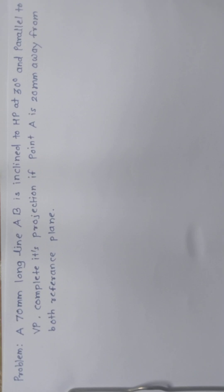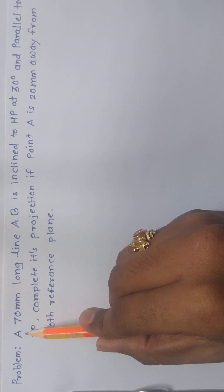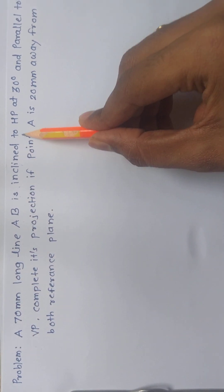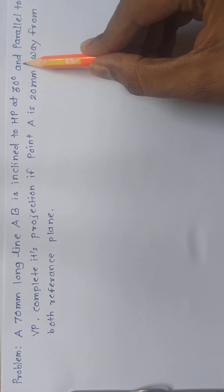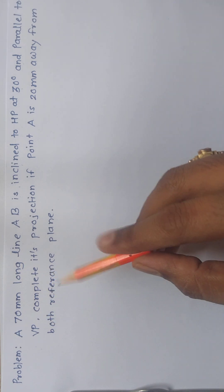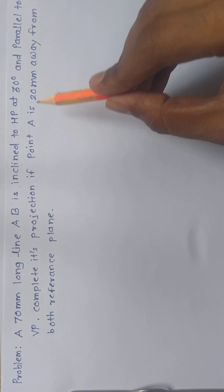Hello dear students, we are going to see the practical problem or demonstration of the line problem. A 70mm long line AB is inclined to HP at 30 degrees and parallel to VP. Complete its projection if point A is 20mm away from both reference planes.